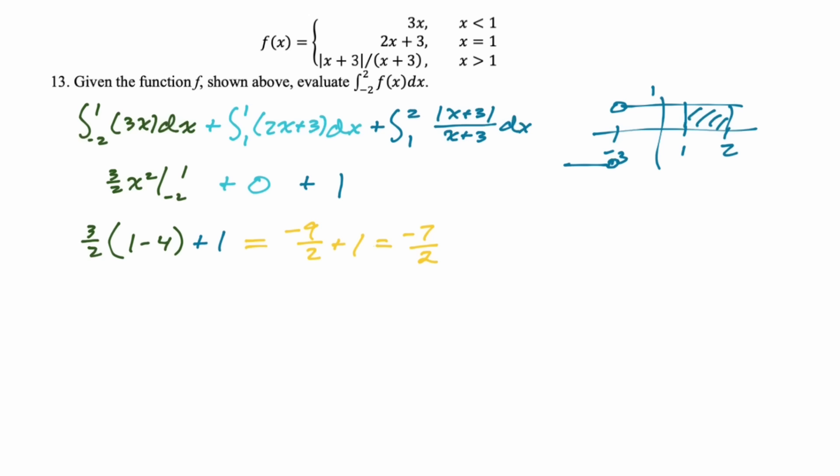You can integrate straight over a jump discontinuity. In Calc AB, you'd never be asked to integrate over a vertical asymptote or infinite discontinuity. In Calc BC, you might see that as an improper integral. These examples are all based on AB students getting things wrong.